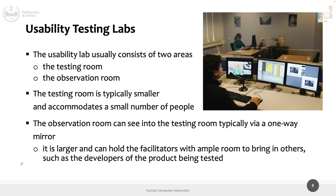Usability testing in professional settings happens in dedicated laboratories - rooms designed for running usability testing, typically split in two. One is the testing room, where the participant sits alone in front of a computer with all needed equipment. The other is the observation room, where the facilitator observes what's going on and can communicate via microphone with the person in the testing room. The person in the testing room is running and experimenting with the application while the facilitator observes.